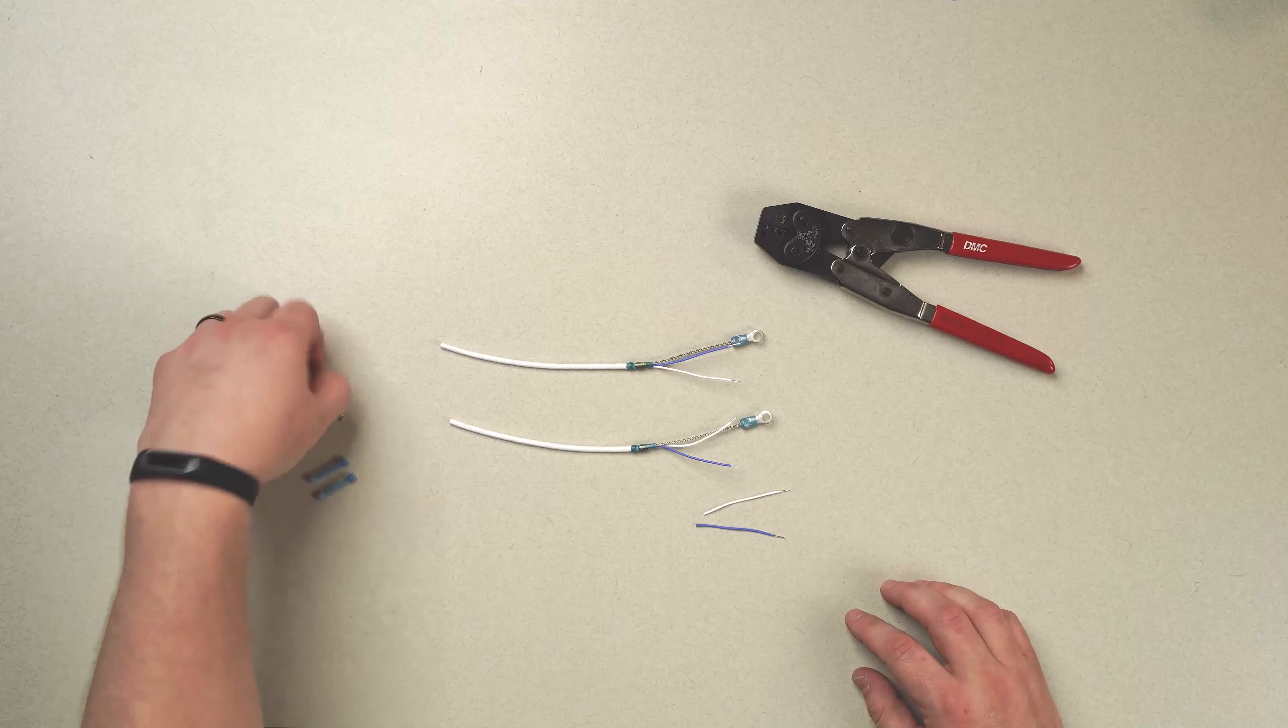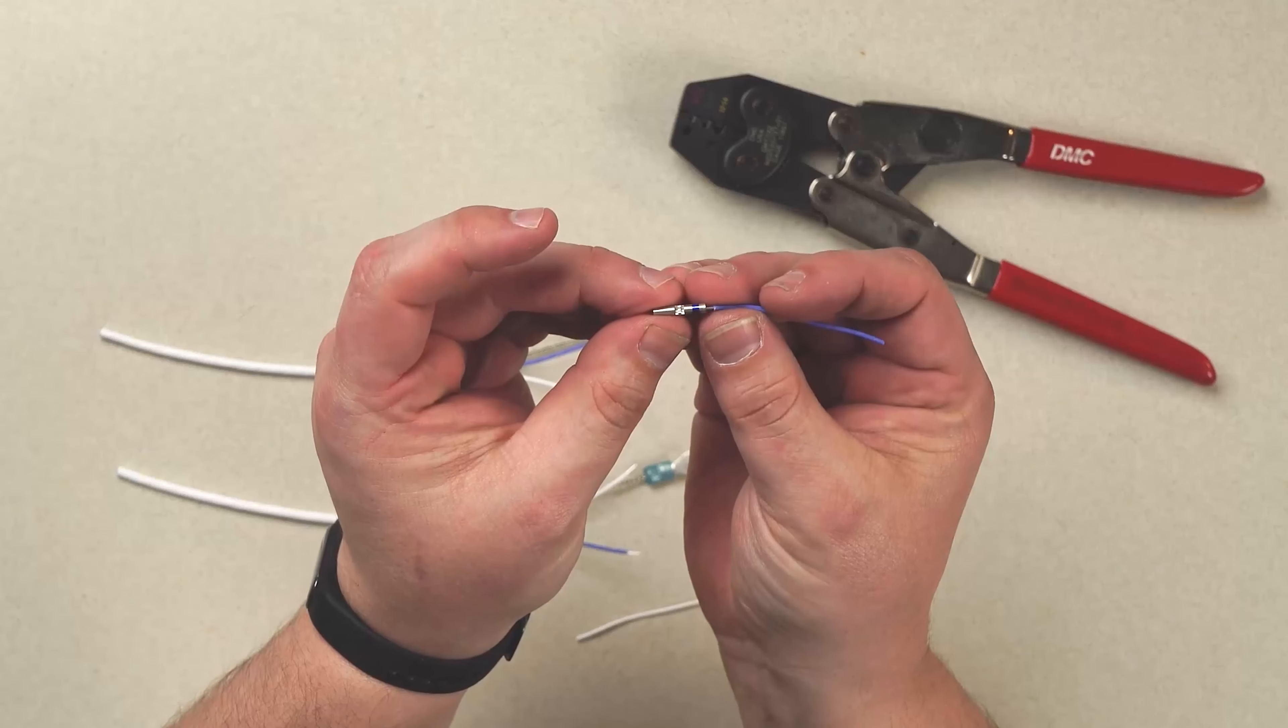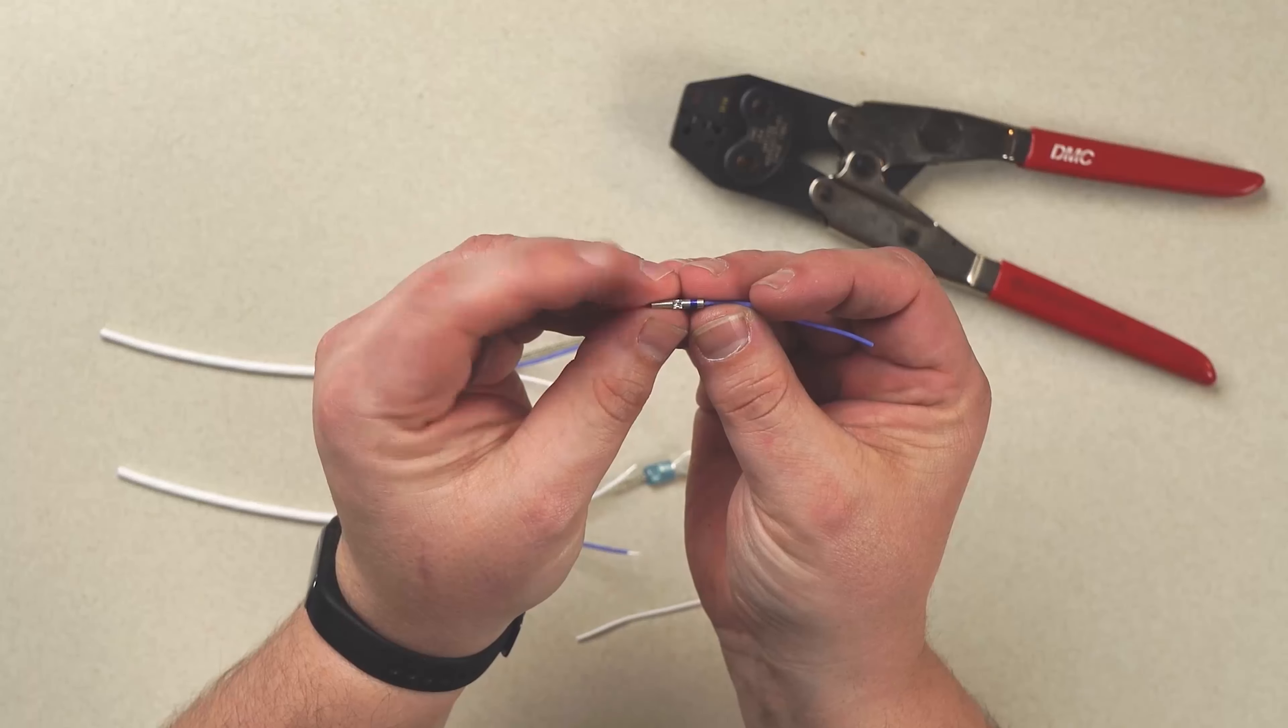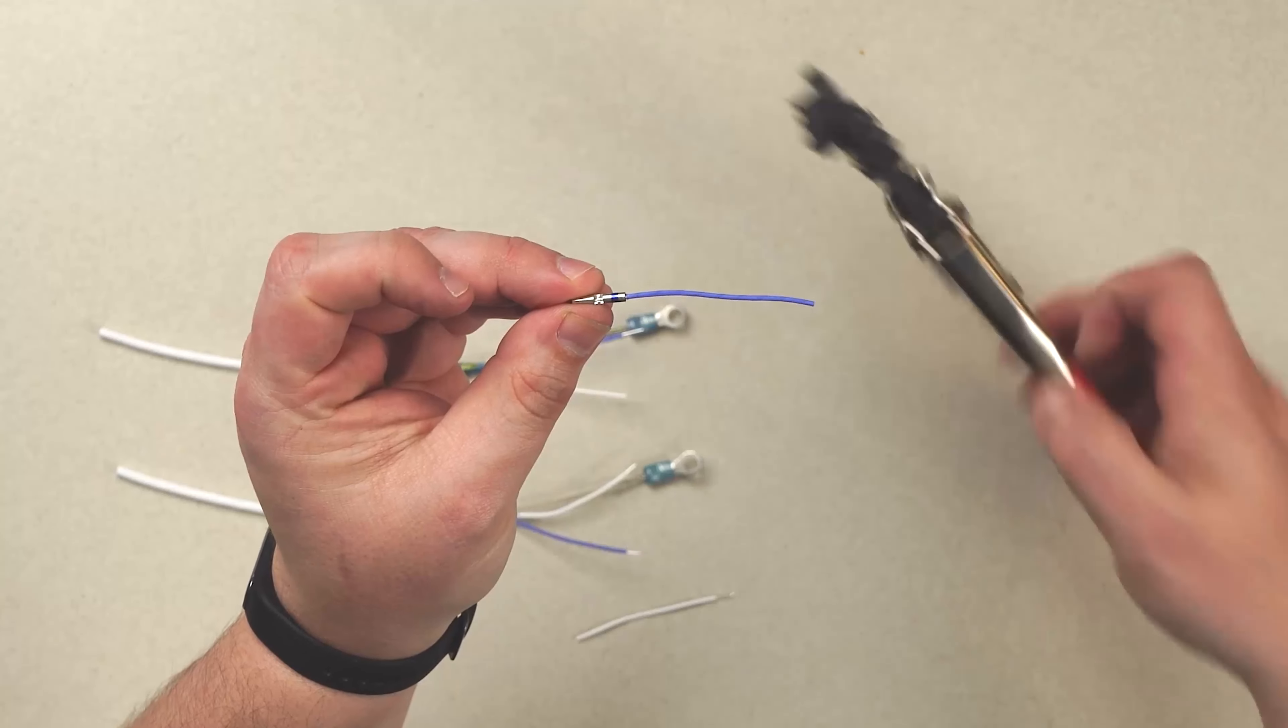Start with our splice and our lead wire, again, making sure that we have full penetration. We can see in the window in the center, the spliced wire is there.